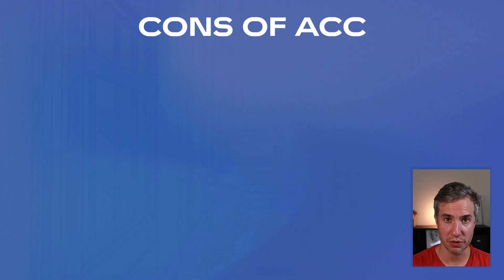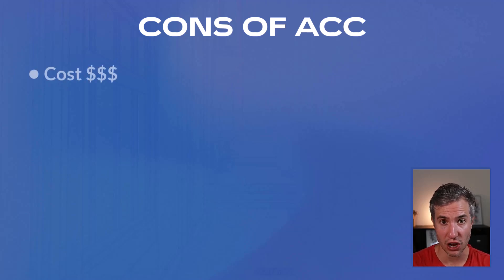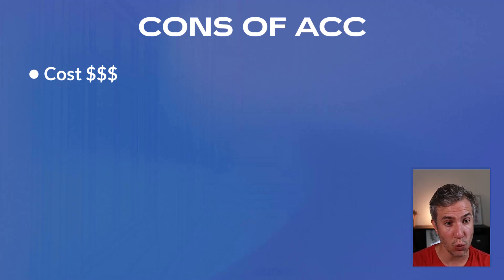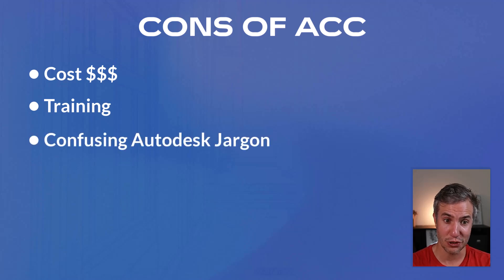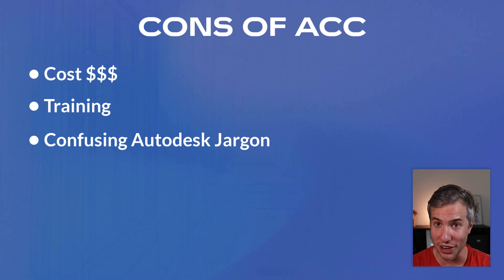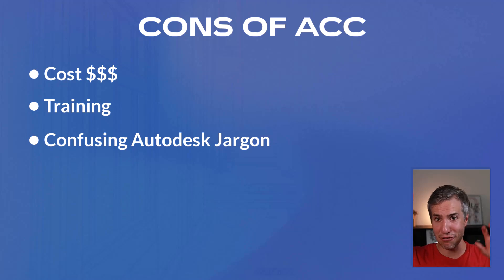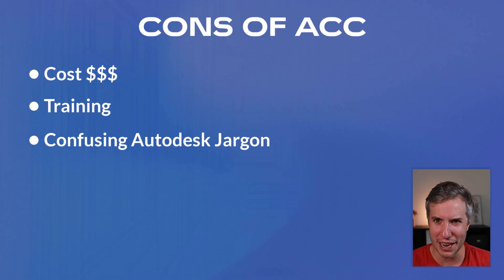Now let's talk about some cons of working with ACC. The first, most obvious one, is the cost — you need to pay an extra license to work with Revit workshared cloud models. The second is training: on top of Revit training, you now have to do ACC training. The third is confusing Autodesk jargon — there are lots of names of Autodesk products, different services, different subscription licenses, and different teams working on different things, so understanding everything is a bit complex. Although this video tries to help in that regard.